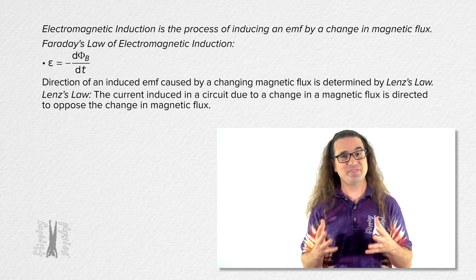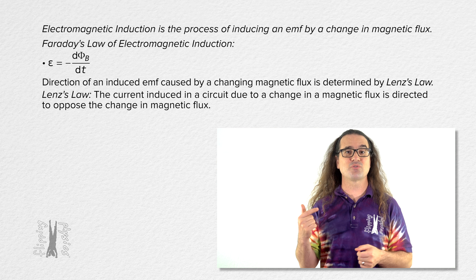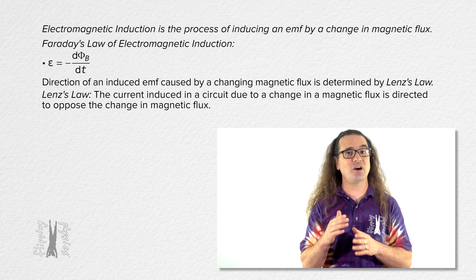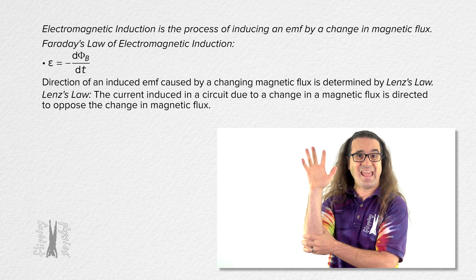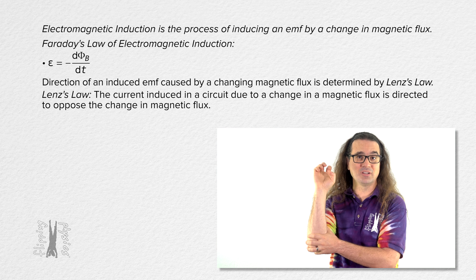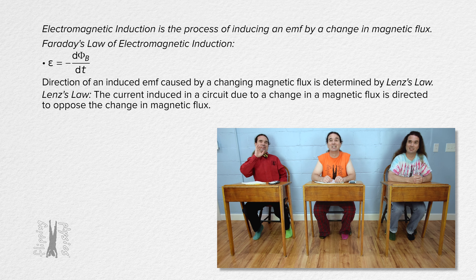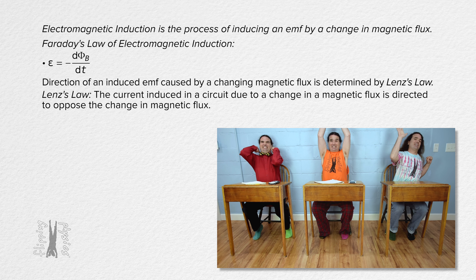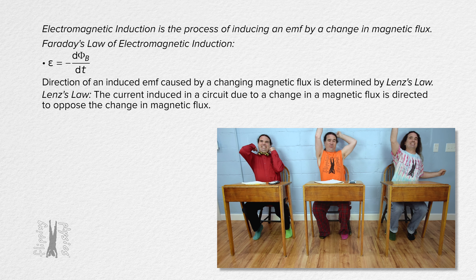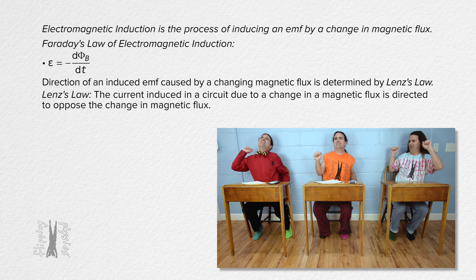To help us understand what that means, to determine the direction of the induced current in a loop caused by a changing magnetic flux, what handy tool do you think we use? The right hand rule. Of course. Don't be too cool — limber up and find your right hand. I feel like we already did this, but it feels so good.